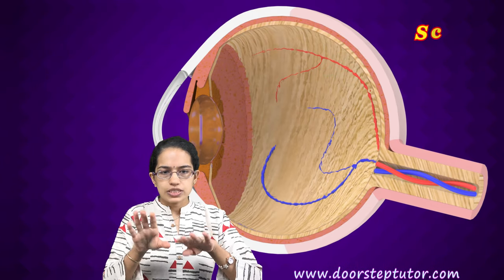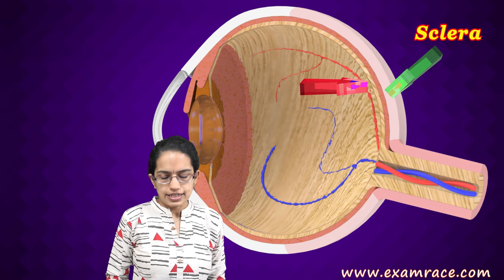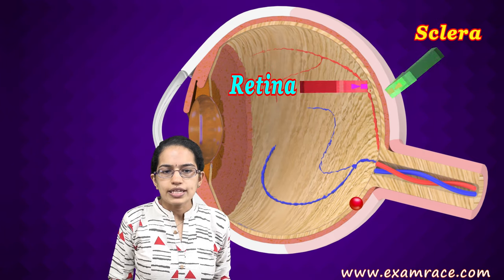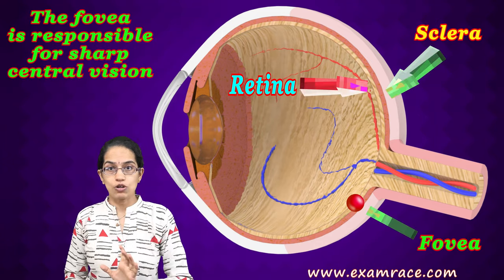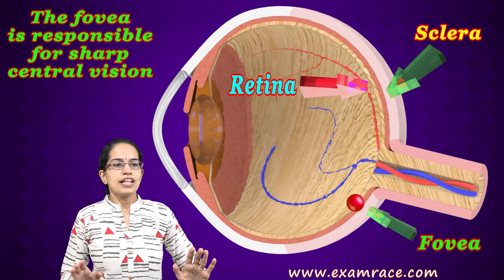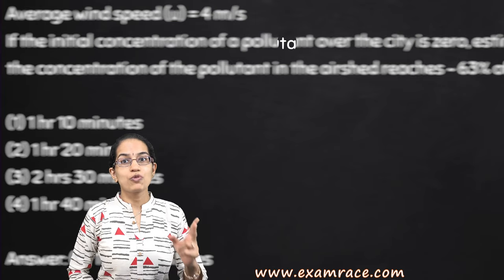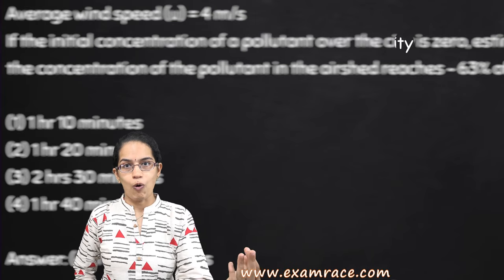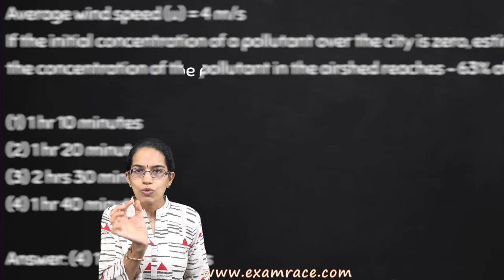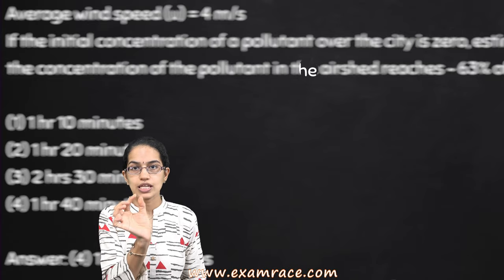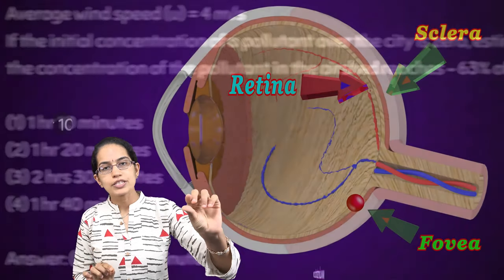The sclera is the outermost layer, and within it we have other layers including the retina. On the retina we have the fovea. Fovea is the point where we have the brightest, clearest vision. At any one time, only about two letters of a page you are looking at would be visible in the clearest form — we see the whole page only because our eyes are constantly scanning. The most precise vision occurs when the image forms on the fovea.